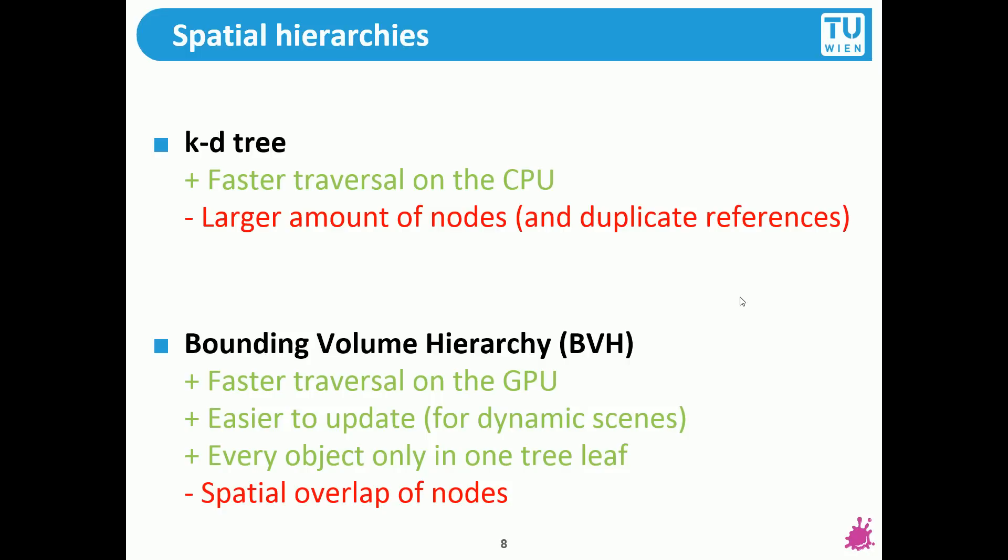Another advantage for bounding volume hierarchies is that every object is only in one tree leaf. This is naturally because it's constructed that way but a negative point of them is that the nodes can spatially overlap. If you put two triangles that are close by each other into different nodes of the bounding volume hierarchy then you still generate the box around them to do a fast intersection test but if those triangles are right next to each other then a simple box will have some overlap. The bounding volume hierarchy can be inefficient if you generate a lot of boxes with content in it that overlap to a large extent.